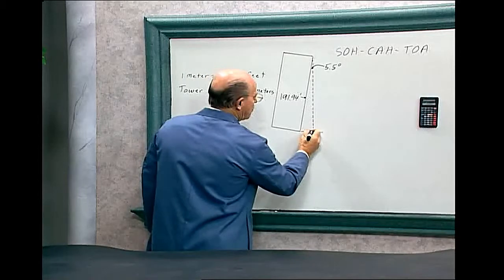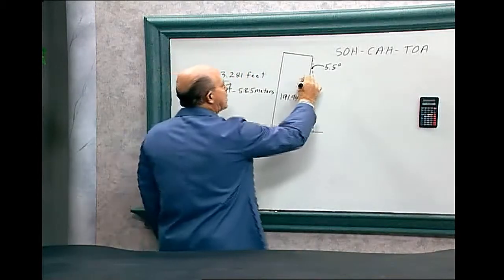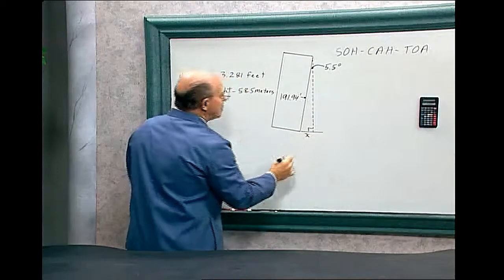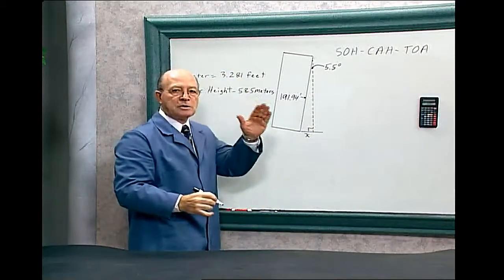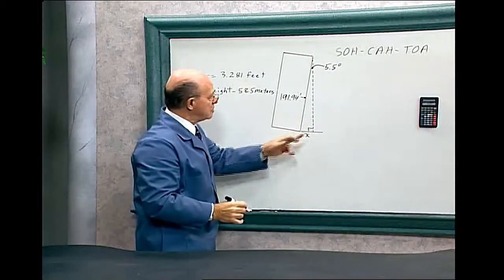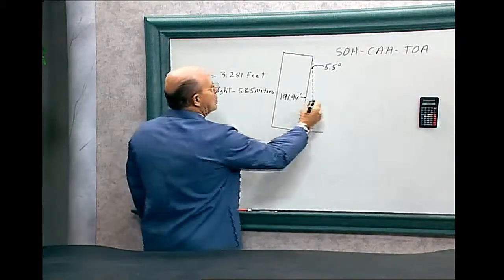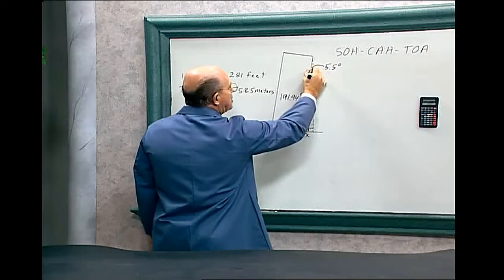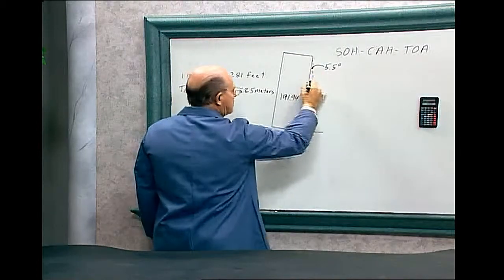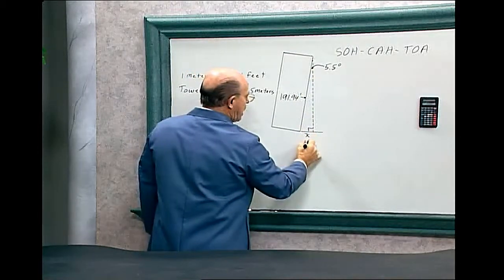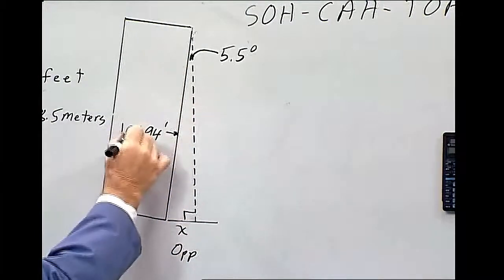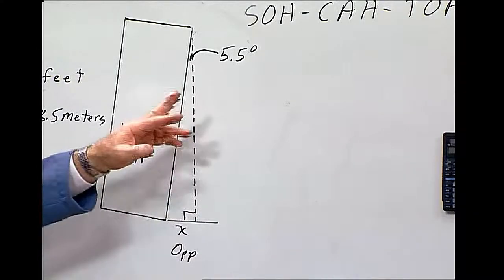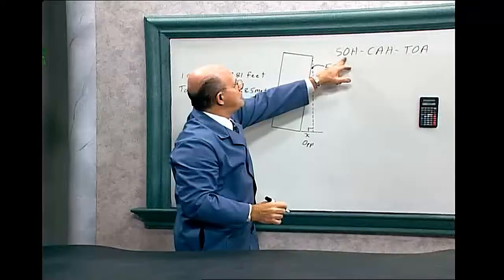Now we have here a right triangle. We know the angle, and we want to find how many feet does this tower tilt. So that's this dimension. Here's the angle, and so we have the opposite side. And then here we have the hypotenuse.